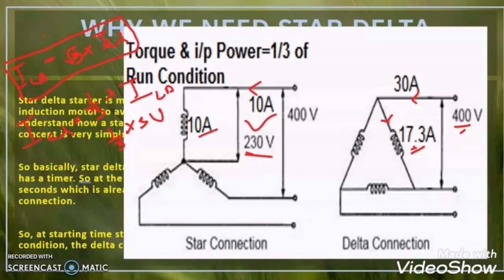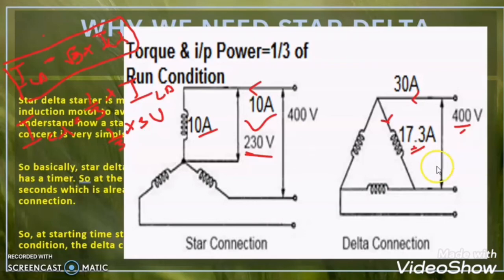So what is the trick? The star delta starter first makes the motor winding in the star configuration. By doing so, the current in the winding and the voltage across the winding will be less, so the starting inrush current will also be less. Once the motor catches its rated speed, the star delta starter changes the motor winding configuration into delta connection to get its rated voltage and rated current.